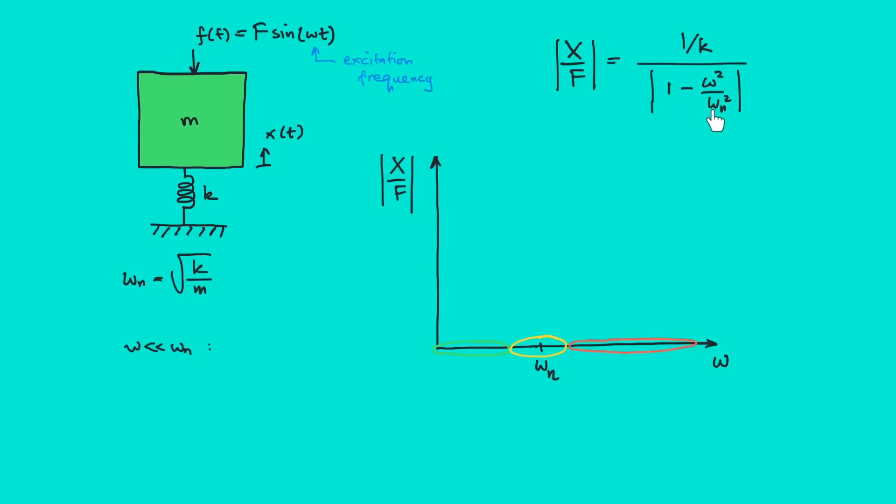So we have 1 over 1 million which is 0.000 something. So X over F is 1 over k. So the way we present this in the graph is that at this region the level of X/F is almost constant at 1 over k.